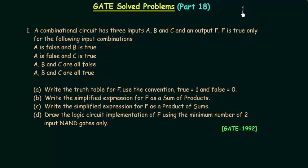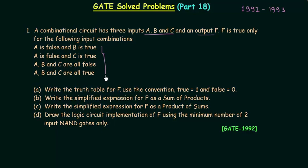In this part I will solve problems from the GATE 1992 and 1993 paper. A combinational circuit has three inputs A, B and C and an output F. F is true only for the following input combinations: A is false and B is true; A is false and C is true; A, B and C are all false; and A, B and C are all true.